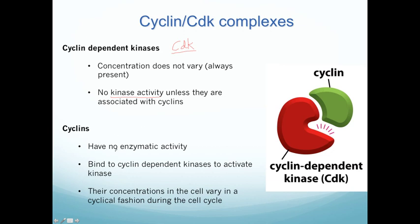Cyclins, on the other hand, don't have any enzymatic activity — that's one key thing about them. But they regulate the cyclin-dependent kinases by binding to them and helping activate the kinase activity. What's interesting about cyclins, and why they're called cyclins, is that their concentrations vary across different phases of the cell cycle. For example, certain cyclins are made only in G1, and others only in G2. Their concentrations vary in what's called a cyclical fashion — and that's why they're called cyclins.